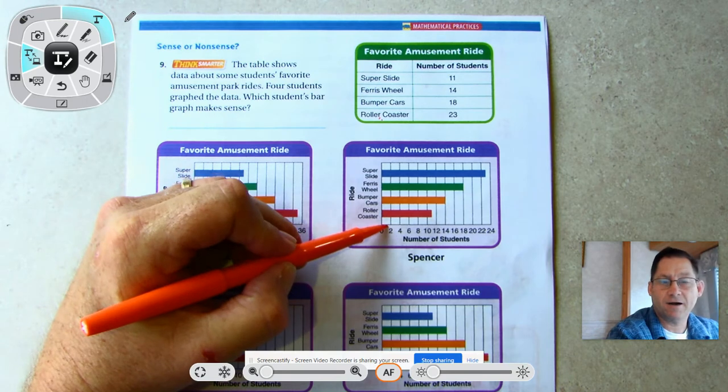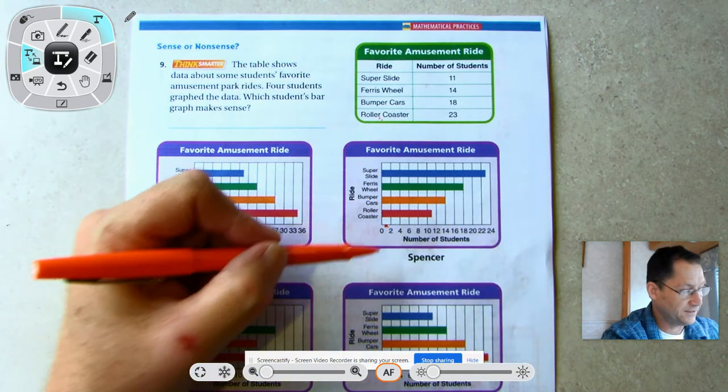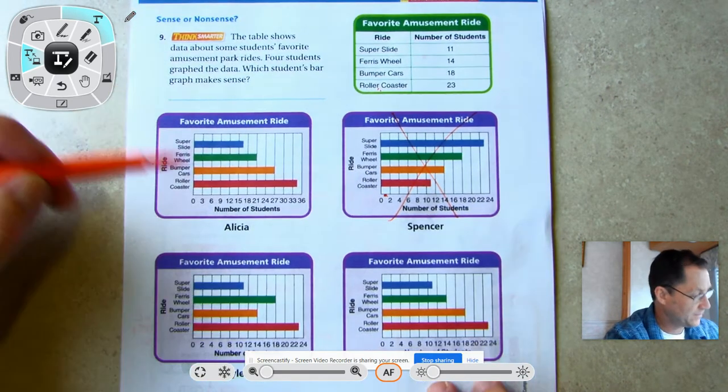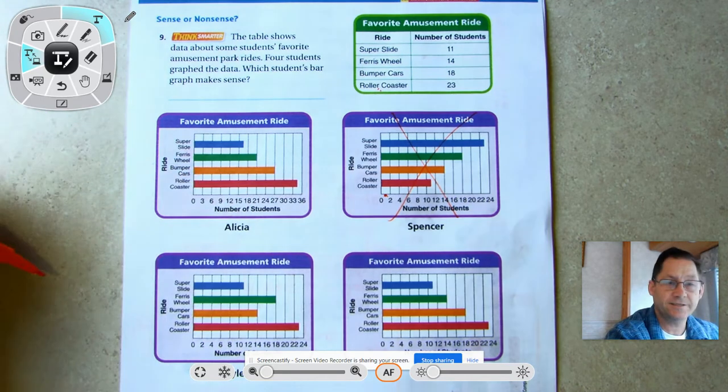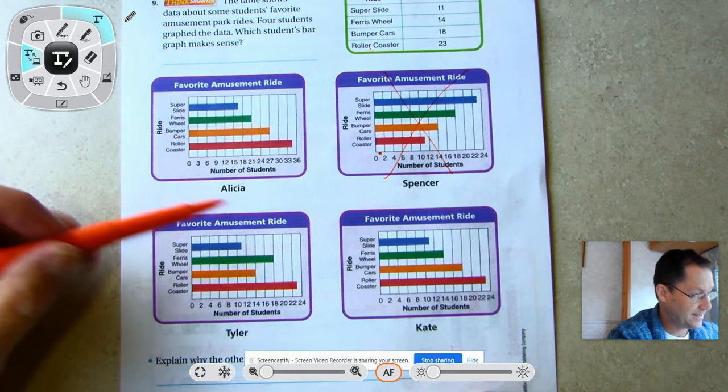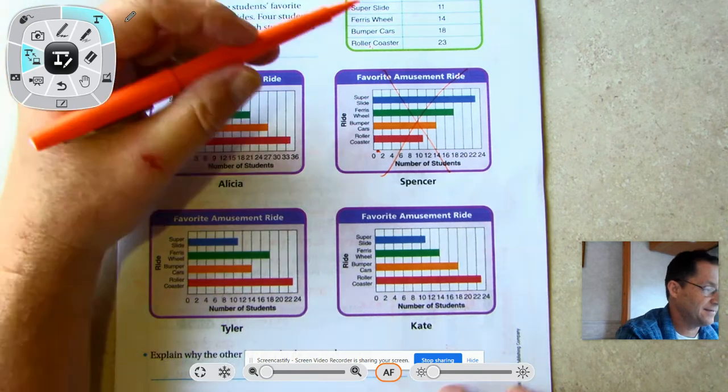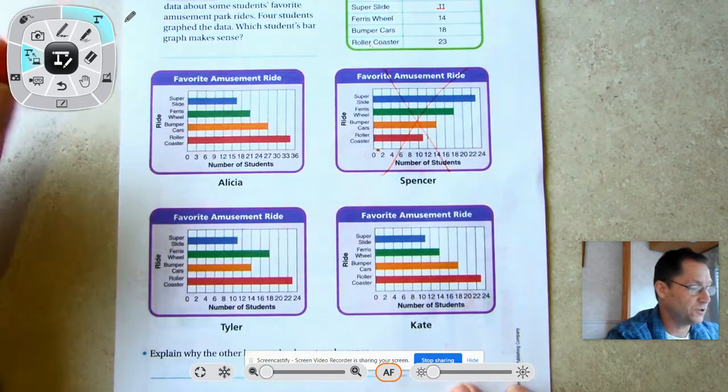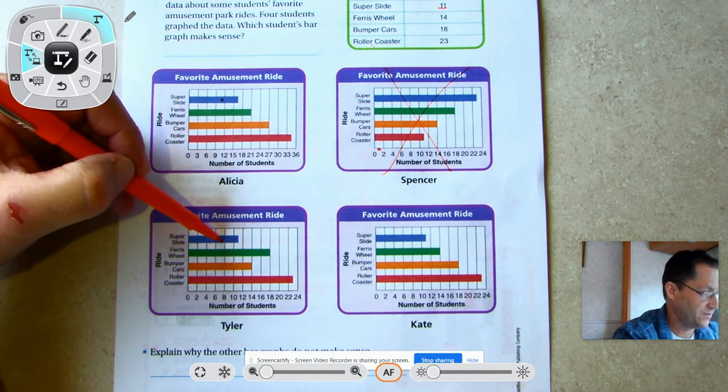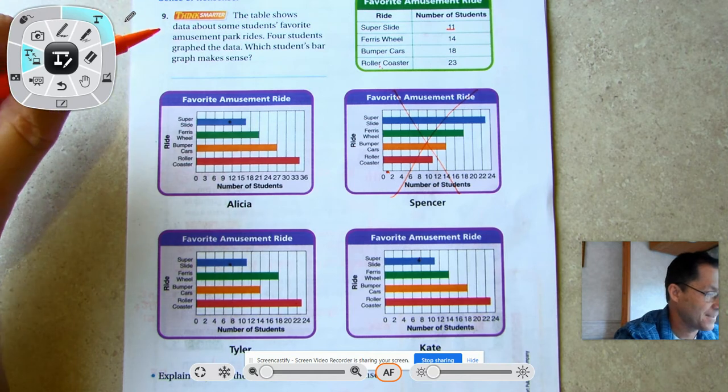Because roller coaster is not the longest on his bar. This one could be right - roller coaster is the longest. This one could be right, Tyler does have the longest. And so does Kate. So we eliminated one just by looking at the length. Now let's see, the shortest one should be super slide. Super slide is the shortest in this one, shortest in this one, and shortest in this one. So we didn't eliminate anything. Now let's look at the actual number. Super slide is 11, so 11 would be close to the 12, to the left of the 12. So this one can't be right because the super slide is in the wrong spot.